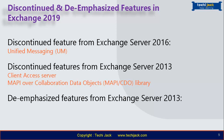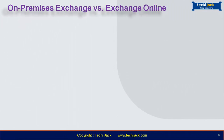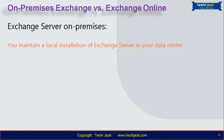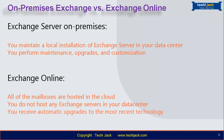De-emphasized features from Exchange Server 2013 include RPC over HTTP protocol and Database Availability Group support for failover cluster administrative access points. Regarding Exchange Online versus Exchange on-premises: with on-premises Exchange, you maintain all local installations in your own data center and are responsible for maintenance, upgrades, and all customization. With Exchange Online, all mailboxes are hosted in the cloud — you don't maintain upgrades or customizations, there's no Exchange server in your data center, and you receive automatic updates and upgrades to the most recent technology, all managed by Microsoft.